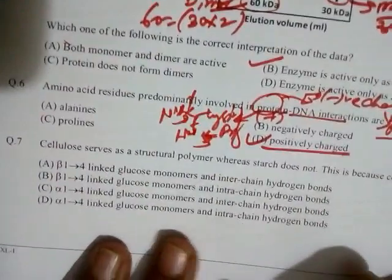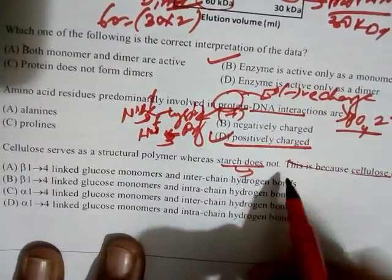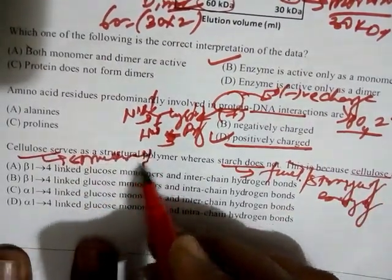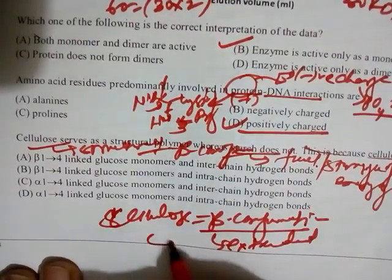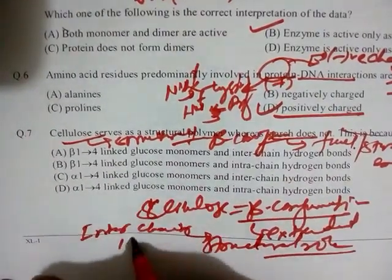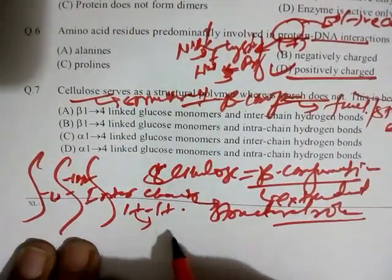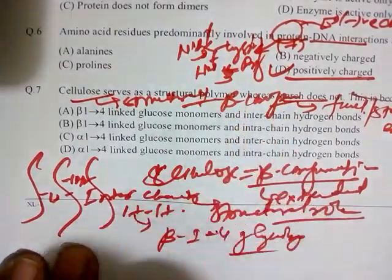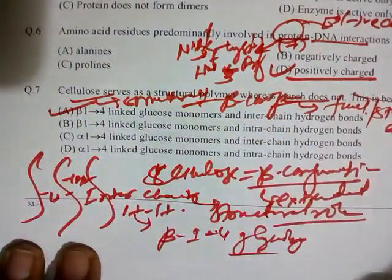Question seven: Why does cellulose serve as a structural polymer while starch does not? Starch acts as a storage material for energy. Cellulose has a beta configuration, which gives it an extended form suitable for structural roles. Cellulose also forms inter-chain hydrogen bonds and has beta-1,4 glycosidic linkages, while starch has alpha-1,4 linkages. The answer is beta-1,4 linkage in glucose monomers with inter-chain hydrogen bonds.